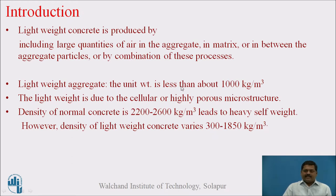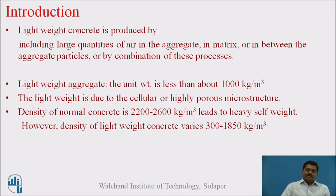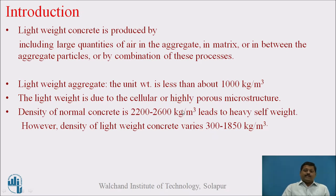Why is the density less? This is only because of the cellular structure or highly porous microstructure of the aggregate — the lightweight is because of this reason only. Generally, the density of normal concrete is 2200 to 2600 kg per meter cube, which leads to heavy self-weight of structural elements. However, the density of Lightweight Concrete varies from 300 to 1850 kg per meter cube.